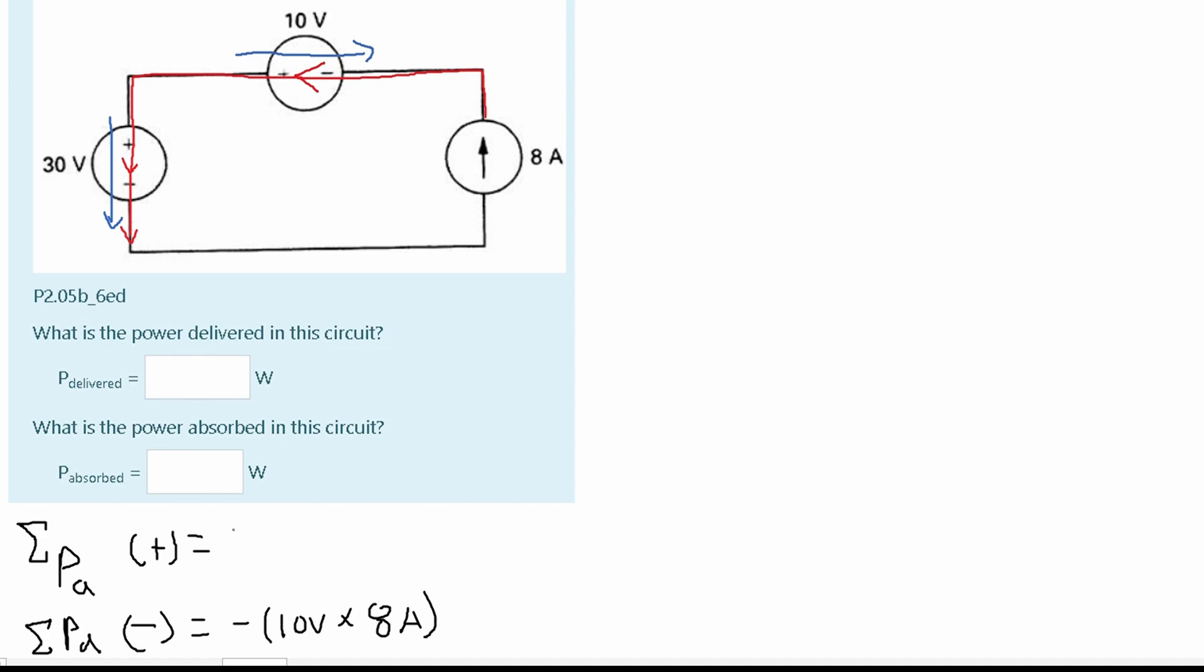So we're going to have 10 volts times 8 amps. And now we're going to look at power absorbed because our 30 volts is in the same direction as our current. So this means that we're going to have a positive 30 volts times 8 amps.